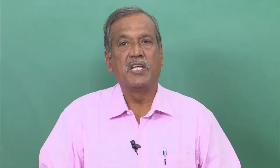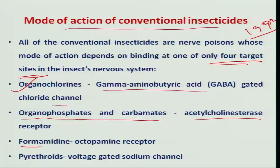When the acetylcholinesterase enzyme is stopped, the insect cannot transfer the message to the next cell, thereby causing paralysis and death. The third target site involves the formidine group of insecticides, which mainly acts on the octopamine receptor of the nervous system, again bringing about paralysis and death of the insect.